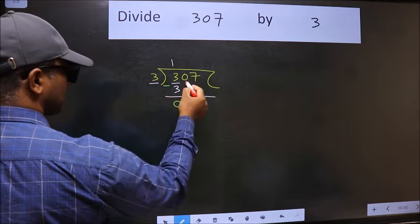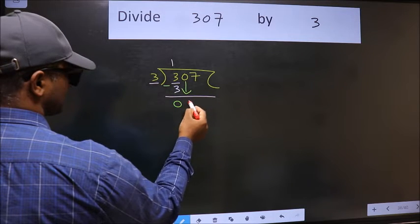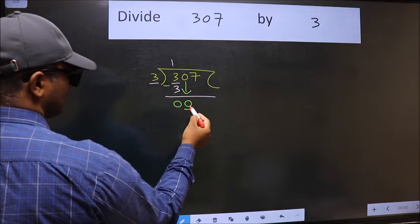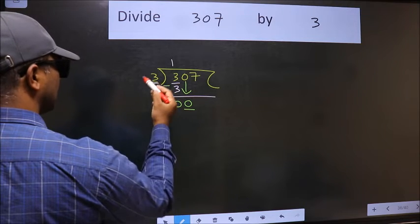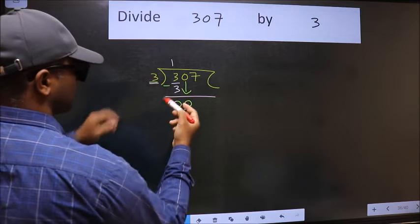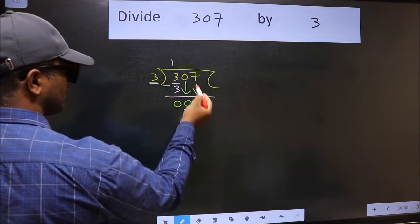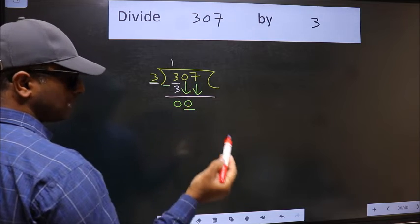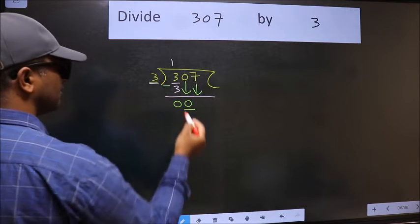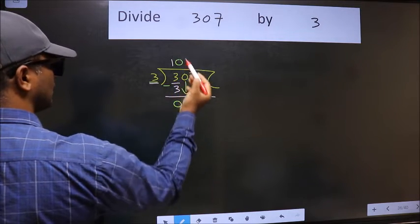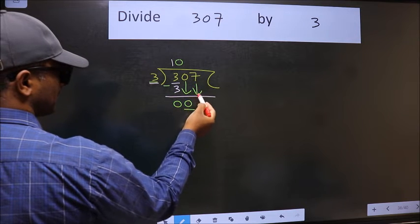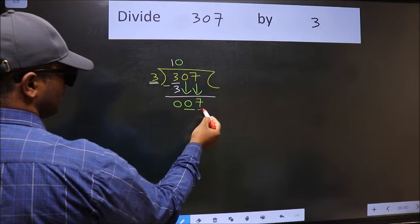After this, bring down the beside number. So 0 down. Now here we have 0 and here 3. 0 is smaller than 3. So we should bring down the second number. And the rule to bring down second number is we should put 0 here. Then only we can bring down this number.